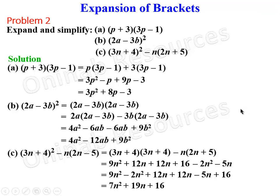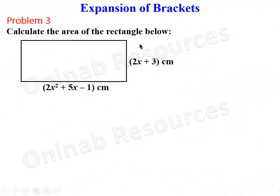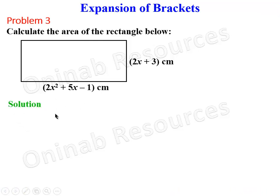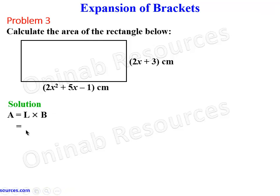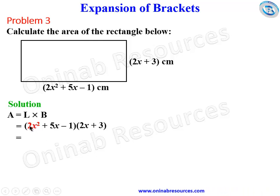We then go to Problem 3, which is an application: calculate the area of the rectangle below. The area of a rectangle is length times breadth. Our length is 2x² + 5x − 1 centimeters and our breadth is 2x + 3 centimeters. Substituting, we have (2x² + 5x − 1)(2x + 3).